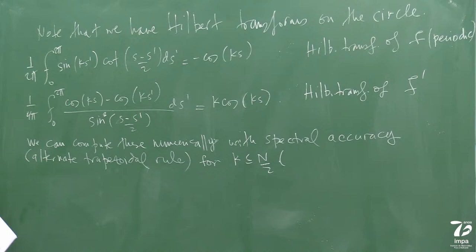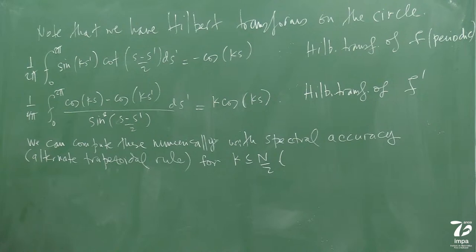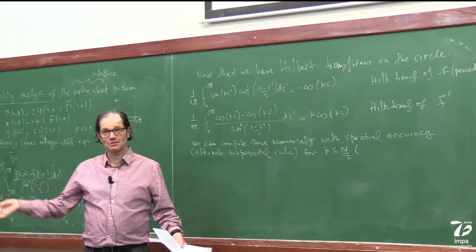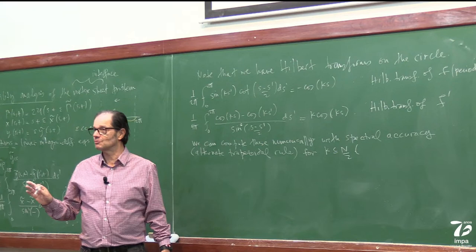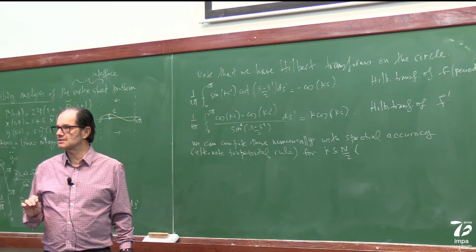I'll give you the name: the Nyquist frequency. The Nyquist frequency is the frequency associated with the sawtooth mode. So n/2: cosine(n/2) is the sawtooth mode — it's plus 1, minus 1. And sine(n/2) is useless because it's zero on the grid — it aliases. So when I put k ≤ n/2, the 'less than or equal' is really only for the cosine; for the sine it should be strictly less than n/2, otherwise the sine is zero on the grid.